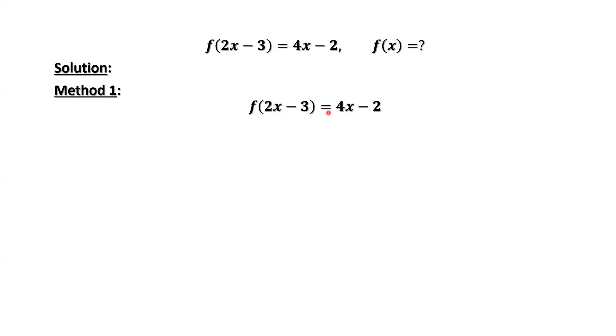2x, 4x, when you times 2. 2x minus 3 times 2 is 4x minus 6. We minus 6 here and plus 6 here to keep the balance of the equal sign.